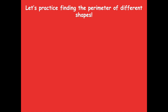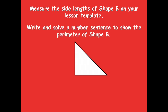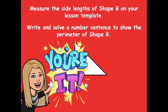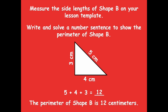Let's practice finding the perimeter of different shapes. Measure the side lengths of shape B on your lesson template, then write and solve a number sentence to show the perimeter of shape B. Pause, do that, and click play when you're ready to go over it together. Here are the measurements: five centimeters, four centimeters, and three centimeters. To find the perimeter, just add those together: 5 plus 4 plus 3 equals 12. The perimeter of shape B is 12 centimeters. Always make sure you label the unit so someone doesn't think you're measuring in inches, which is very different from a centimeter.